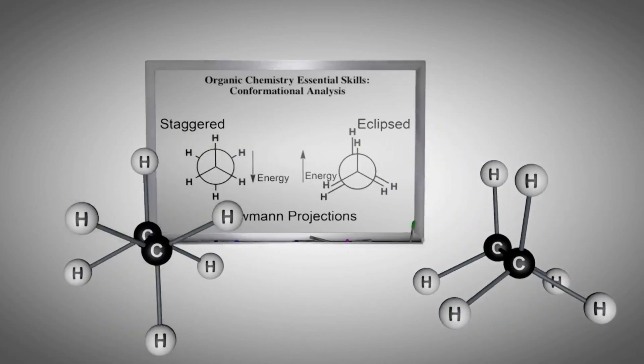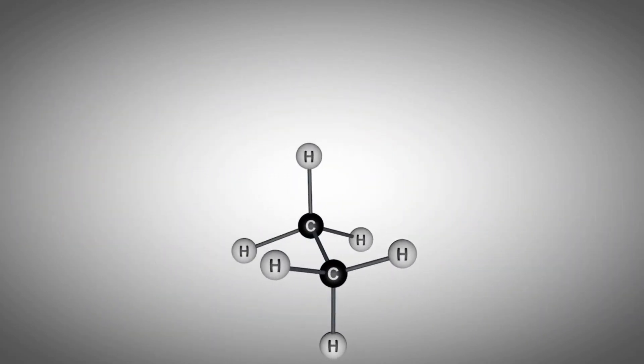When we replace one of the hydrogen atoms with an atom that has a larger atomic radius than hydrogen, steric factors will arise, which will further increase the 3 kcals per mole barrier of rotation.